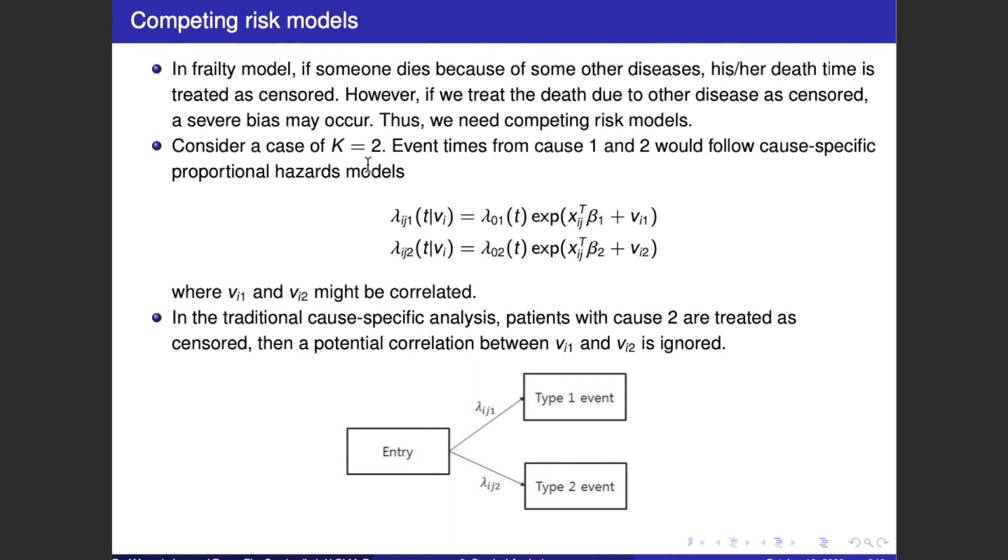Consider a case of K equals 2. The event times from cause 1 and 2 would follow cause-specific proportional hazards models. Therefore, we have two lambdas. Lambda_ig1(t | V_i) equals lambda_01(t) times exp(x_ig transpose beta_1 plus V_i1). At the same time, lambda_ig2(t | V_i) equals lambda_02(t) times exp(x_ig transpose beta_2 plus V_i2).